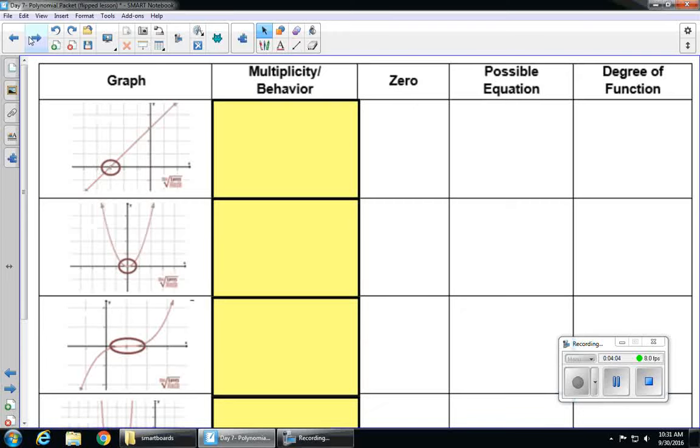This means in terms of its multiplicity and the way it behaves and the zero, a possible equation, and the degree of the given function.